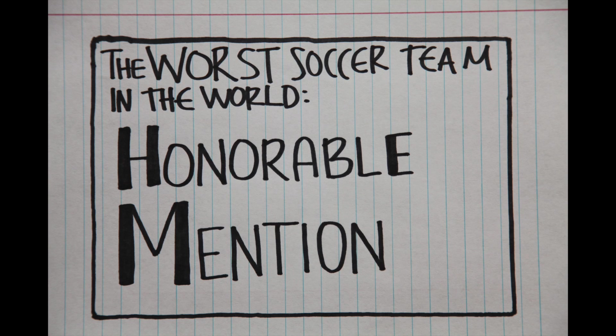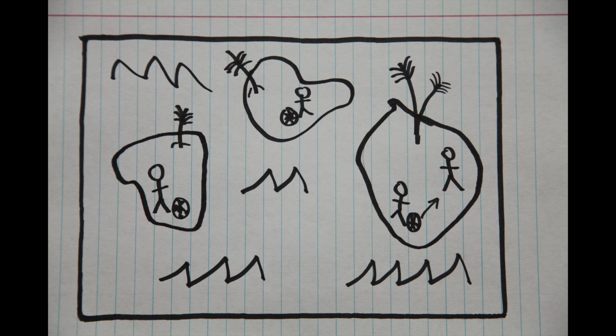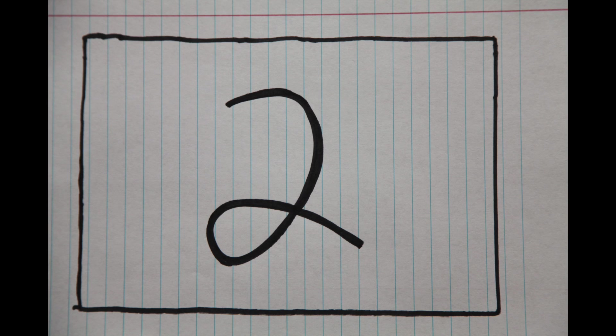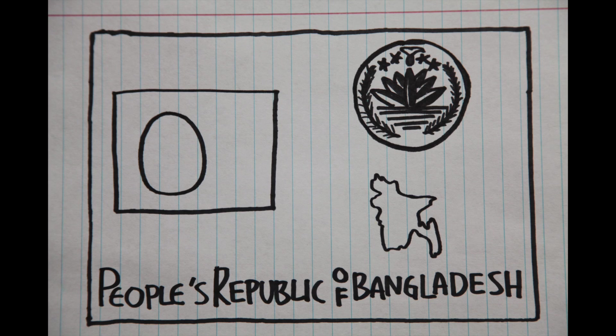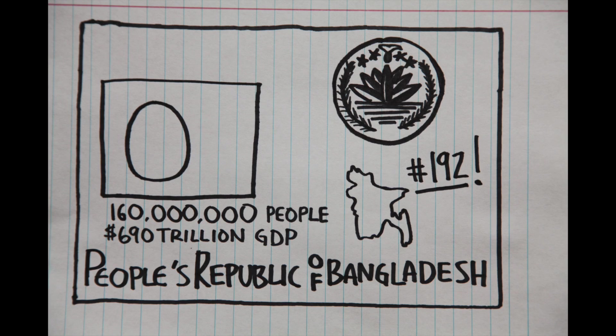Honorable mention time. As you scroll through the island and micronations that perpetually inhabit the bottom fifth of the FIFA World rankings, there are two glaring exceptions. And here, they both earn an honorable mention. The People's Republic of Bangladesh, with a population north of 160 million people and a GDP of 690 trillion dollars a year, sits below American Samoa at number 192.